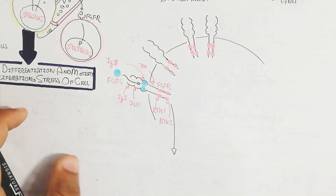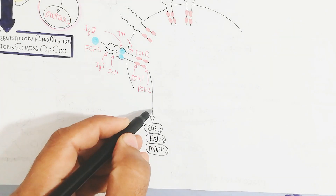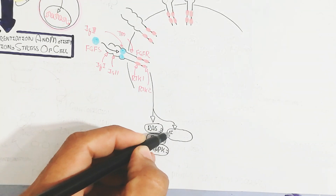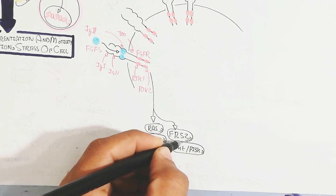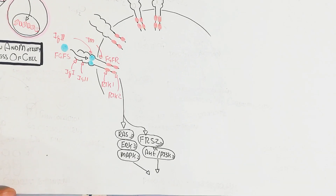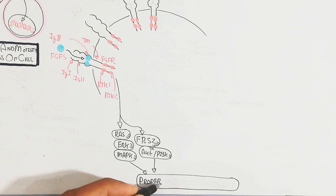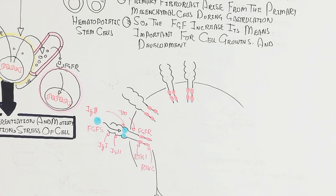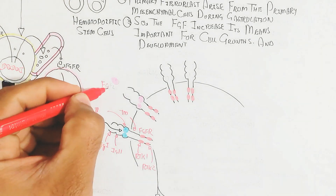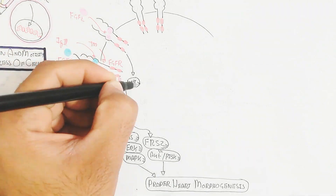When FGF binds to its receptor, it gives a cascade of intracellular phosphorylation through RAS, ERK, and MAP kinase, as well as the FRS2 and AKT pathway and the phosphoinositide 3-kinase pathway. These lead to proper heart morphogenesis and other processes. For example, FGF2 binds with the FGF2 receptor and triggers the Wnt pathway.